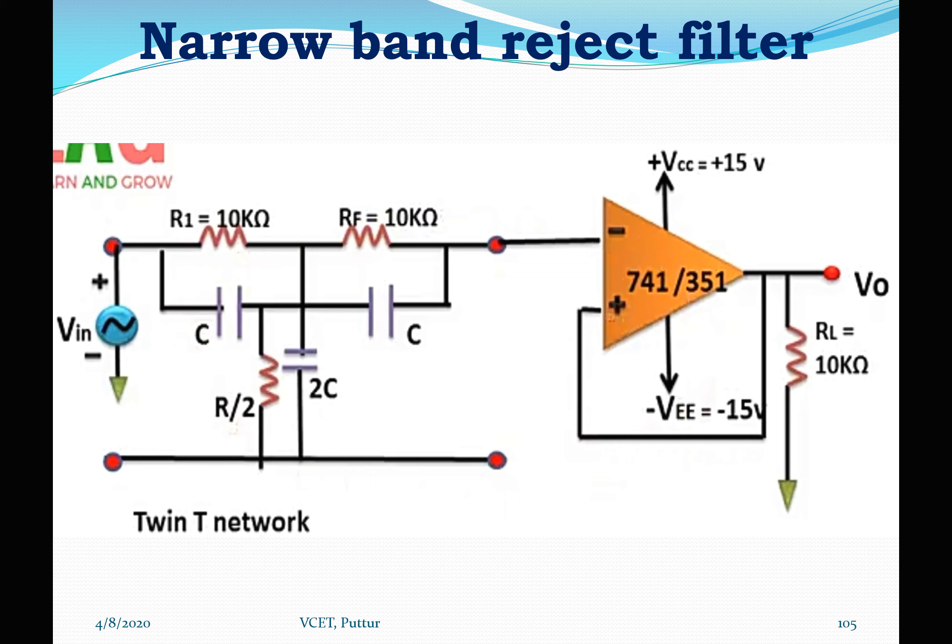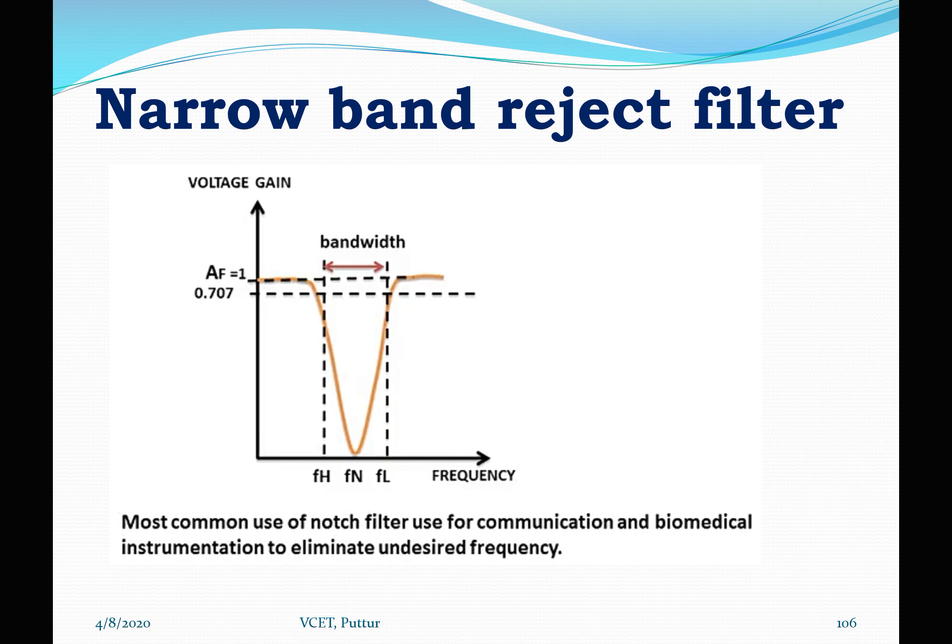The frequency response of the narrow band reject filter shows two pass bands and one stop band. Compared to the wide band reject filter, the bandwidth of the narrow band reject filter is much smaller, with only one particular frequency FN eliminated. These notch filters are mainly used in communication and biomedical instruments for eliminating undesired frequencies.